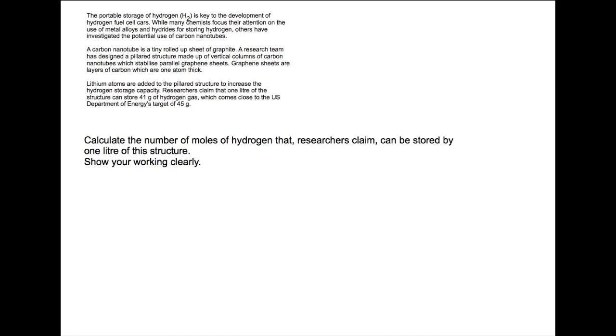So within this question we are given information about a process for storing hydrogen. And the part that we are needing to look at for the numerical part of the question is right here at the end. Where it tells us that 1 litre of the structure can store 41 grams of hydrogen gas. We are trying to calculate the number of moles of hydrogen that can be stored in 1 litre.